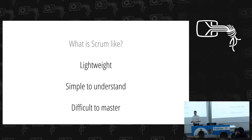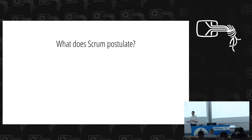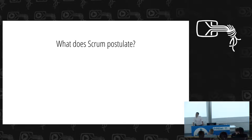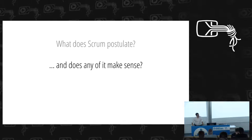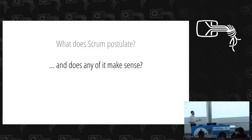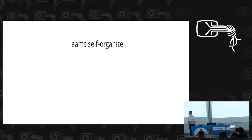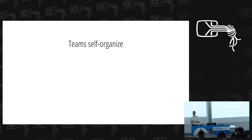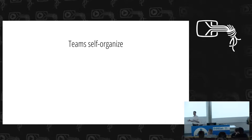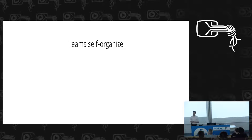Let's look at some of the things that Scrum actually postulates — some explicitly, some implicit and underpinning the idea of Scrum. We shouldn't just look at what Scrum postulates, but more importantly, whether any of it makes sense. There's one very central tenet in Scrum that I'm not going to argue much about, and that is: teams self-organize. Every one of you will at some point have been in a team perfectly capable of self-organization. So this is not something I'd argue as being patently false — it's self-evident that teams are capable of self-organizing.